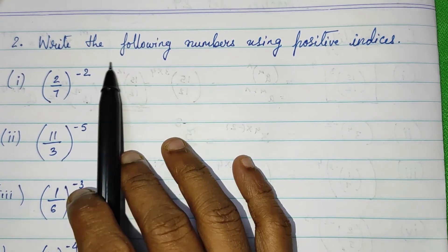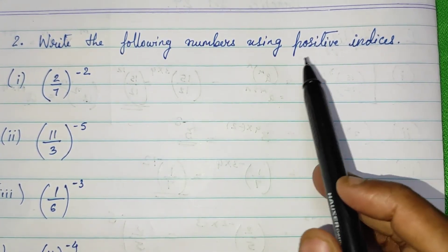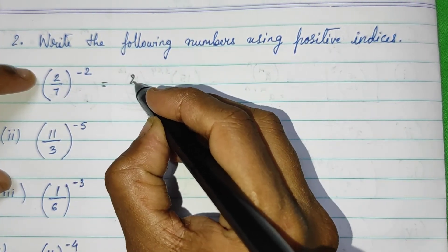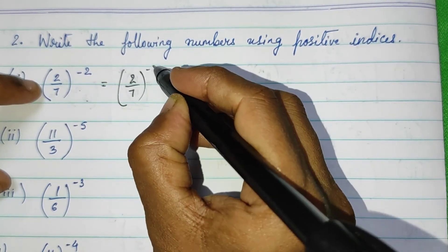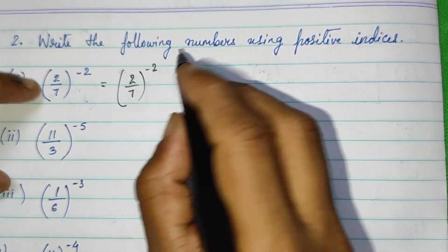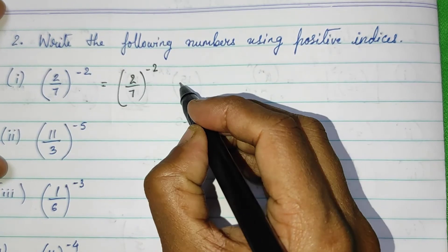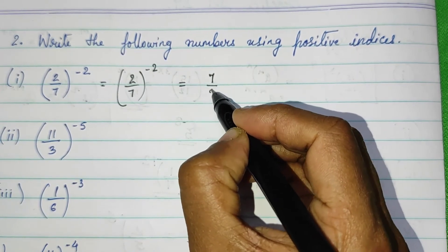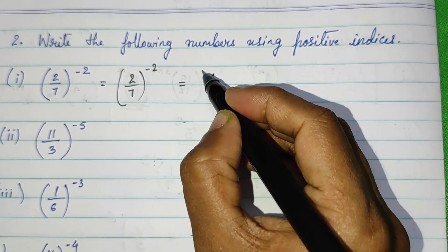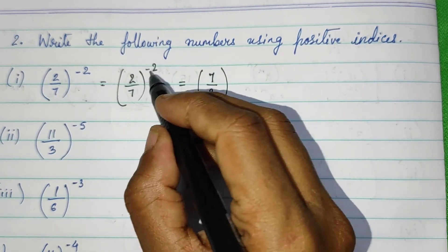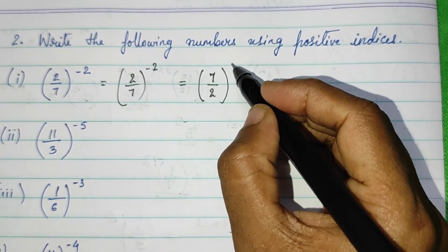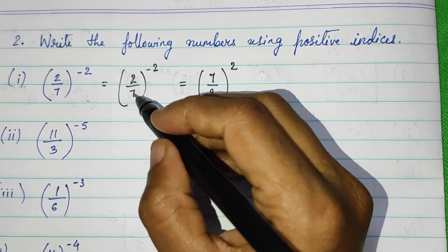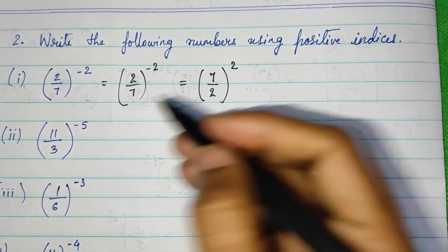Sub question 2. Write the following numbers using positive indices. So in indices, negative indices is not allowed. How we will write this in positive form? What we have to do? This we have to write in inverse form. 2 upon 7, so its inverse form is 7 upon 2, and this minus 2 will become positive 2. Why? Because we have reciprocal this original number.